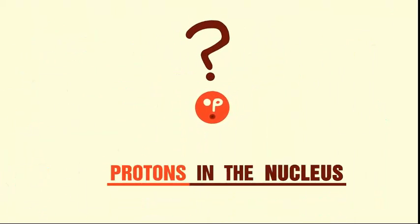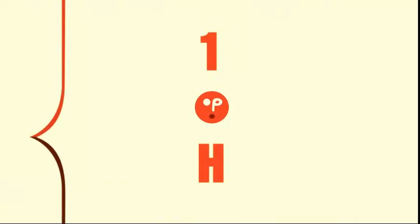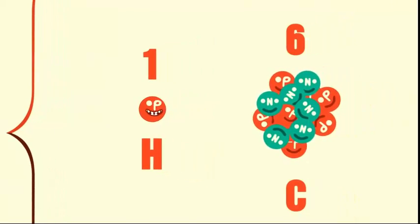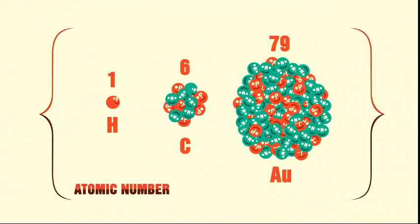The identity of an atom is determined only by the number of protons in its nucleus. Hydrogen is hydrogen because it has just one proton, carbon is carbon because it has six, gold is gold because it has 79, and so on.